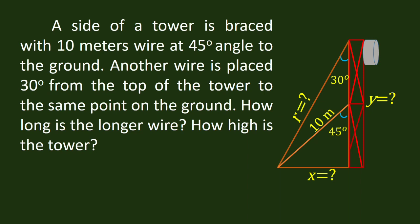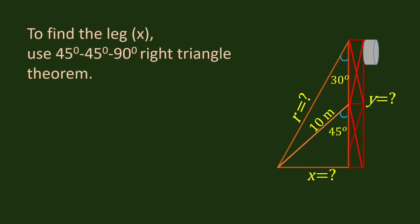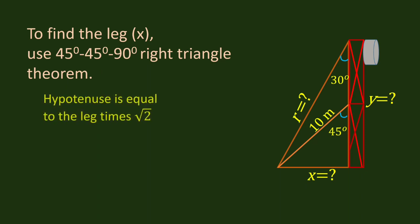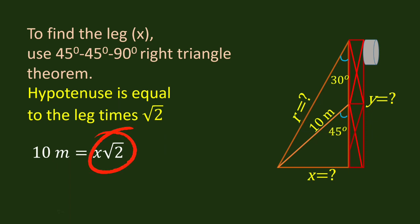We want also to find how high is the tower. But first, we want to find the distance from the tower to the point on the ground where the wire lies. We are going to use the special right triangle, which is the 45-45-90 degrees right triangle. The distance is denoted by x as shown in the figure. The hypotenuse is equal to the leg times the square root of 2, or x times square root of 2. But our hypotenuse is already 10 meters, so that would be equal to x times square root of 2.